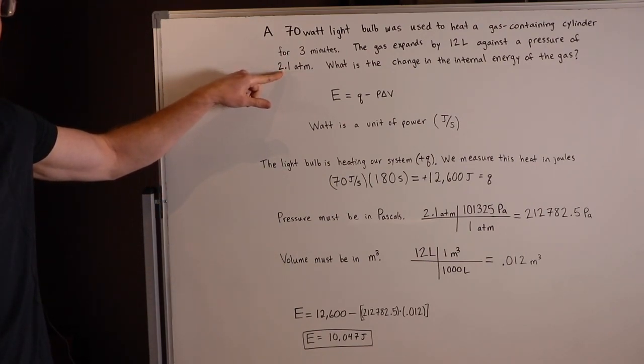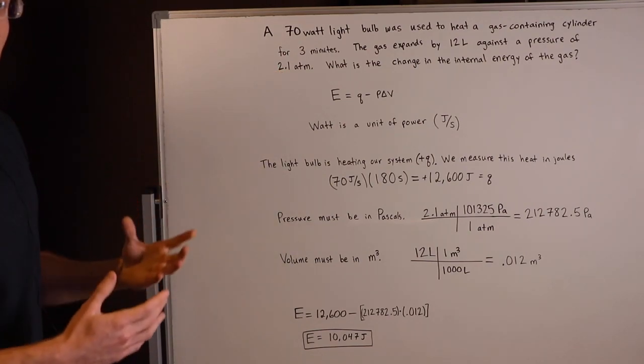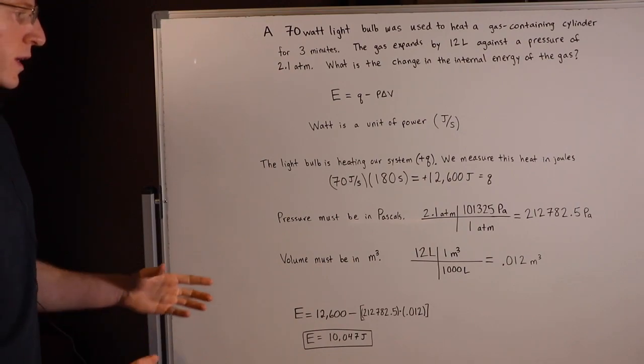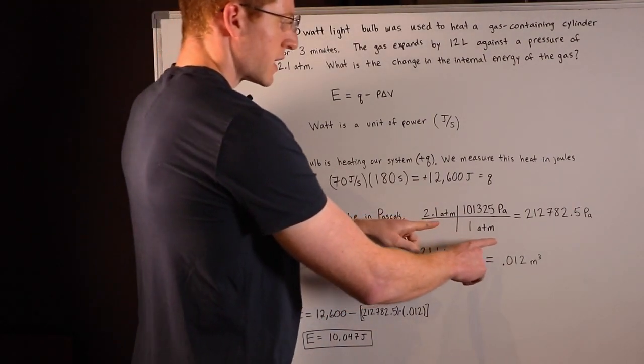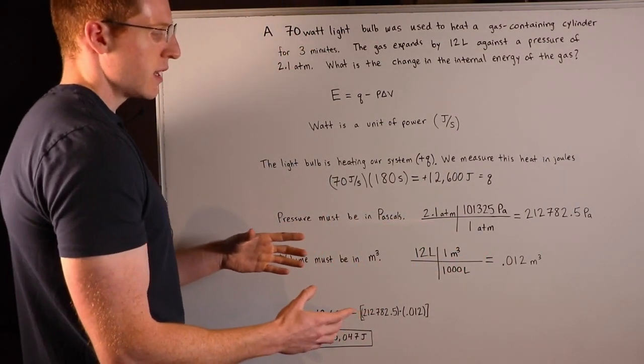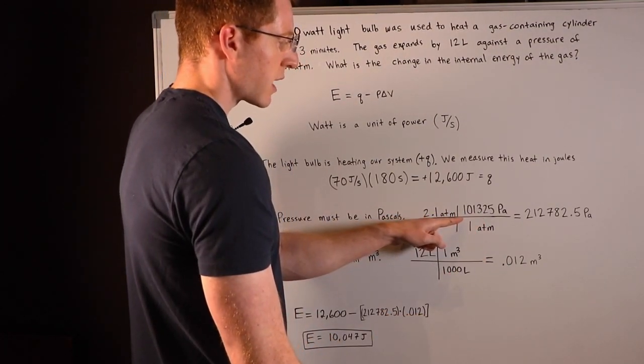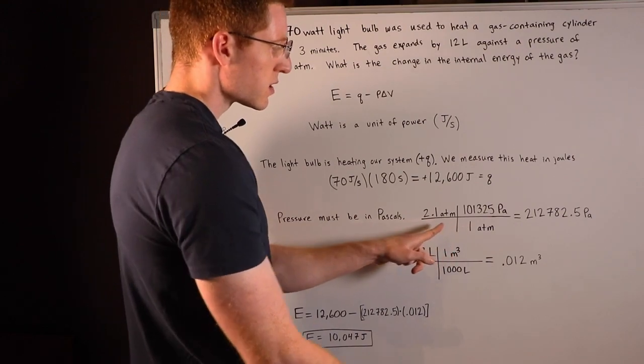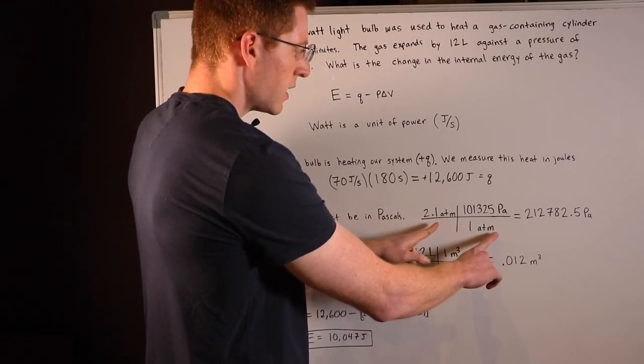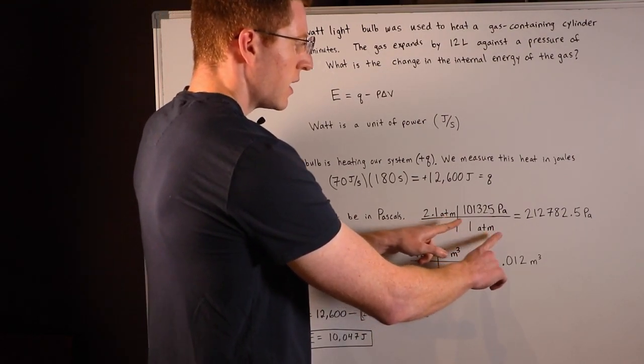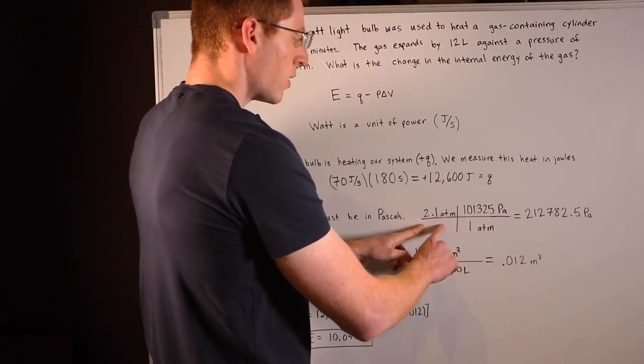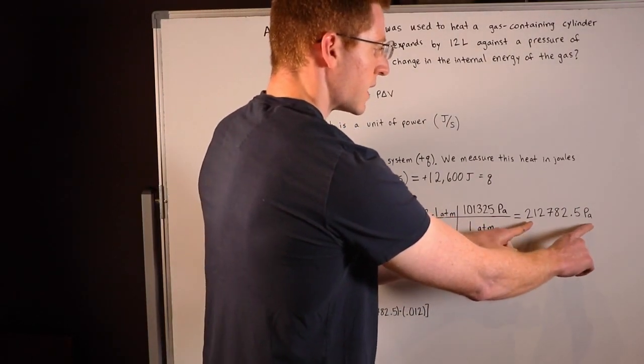So next thing we have to check is the pressure. They gave us pressure in atmospheres, but remember, we need pressure in Pascals. So to change atmospheres to Pascals, you need the conversion factor, and it's 101,325 Pascals per one atmosphere. So I set up the conversion right here, the atmospheres are going to cancel out, and I found that 2.1 atmospheres is this many Pascals.